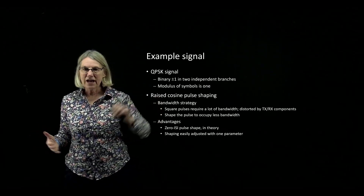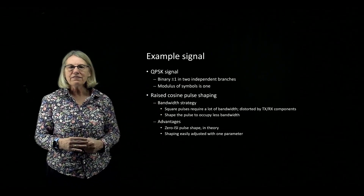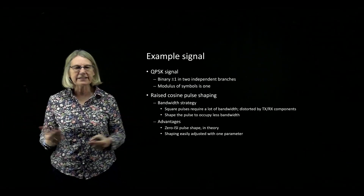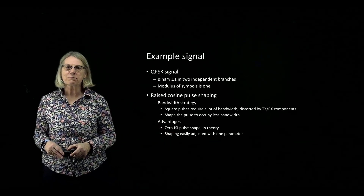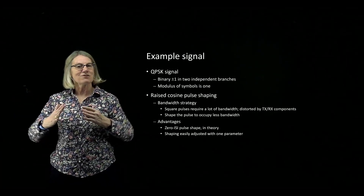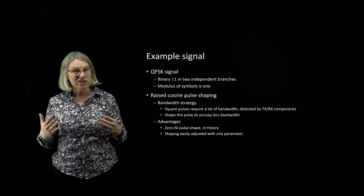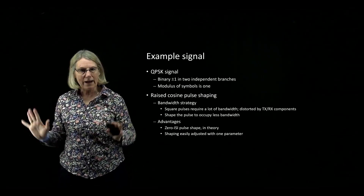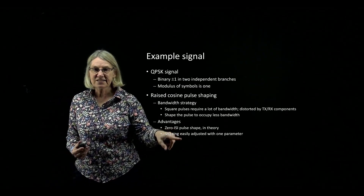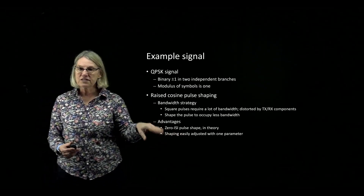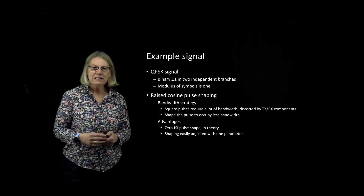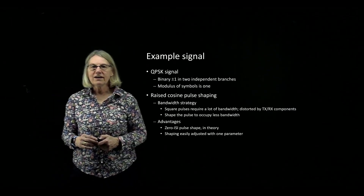The raised cosine has a nice property that, at least in theory, at the optimal sampling time of the signal, there should be no contributions to inter-symbol interference from adjacent pulses. So although these pulses occupy less frequency — meaning they occupy more space in the time domain and overlap — they have a nice structure so that the overlapping does not cause inter-symbol interference, again in theory. There is also one simple parameter to make trade-offs between how realistic the zero-ISI criteria is and how much frequency saving you have.